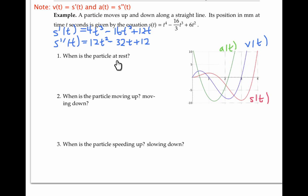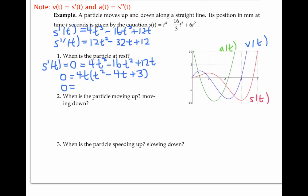The first question asks: when is the particle at rest? The particle is temporarily at rest when the velocity is zero, in other words when s'(t) = 0. Plugging in the equation for s'(t) and factoring out 4t and factoring further, we conclude that t must be 0, 1, or 3. This agrees with our graph of v(t), which has x-intercepts at 0, 1, and 3, and also with the graph of s(t), since the particle stops momentarily to change direction at those times.